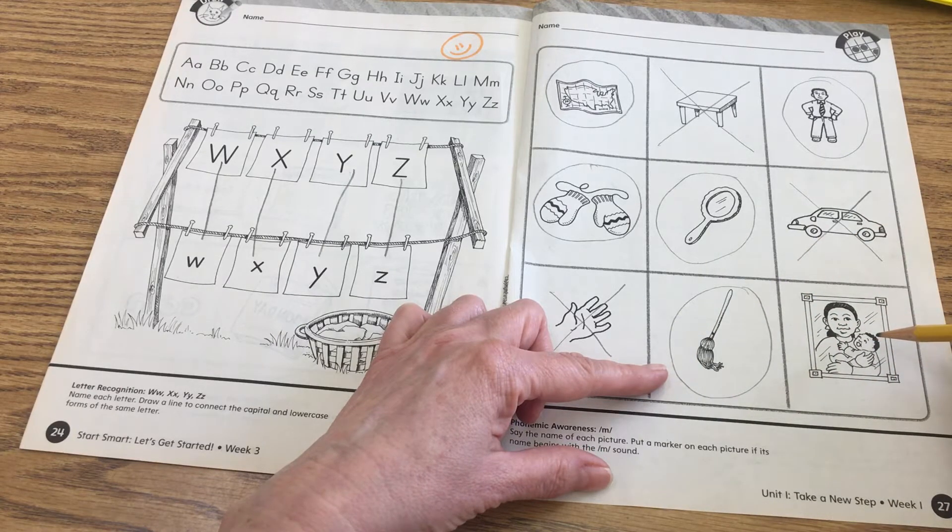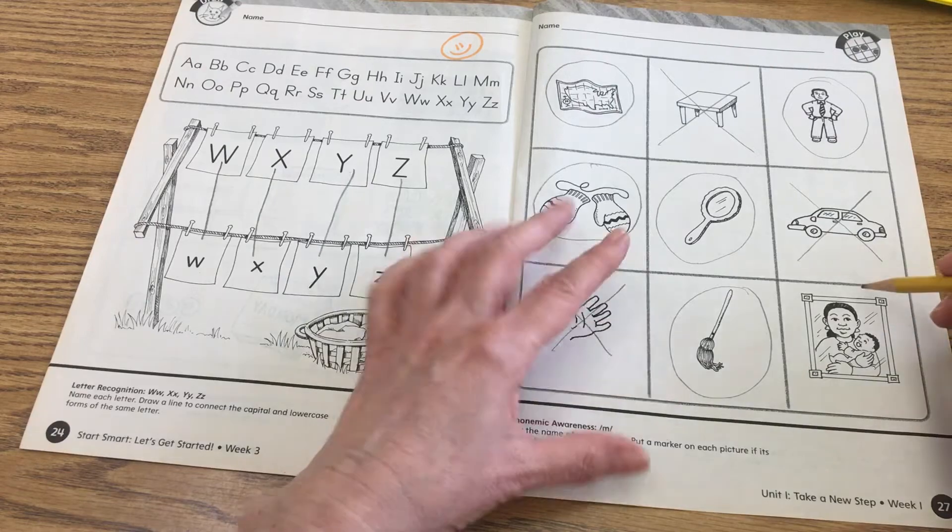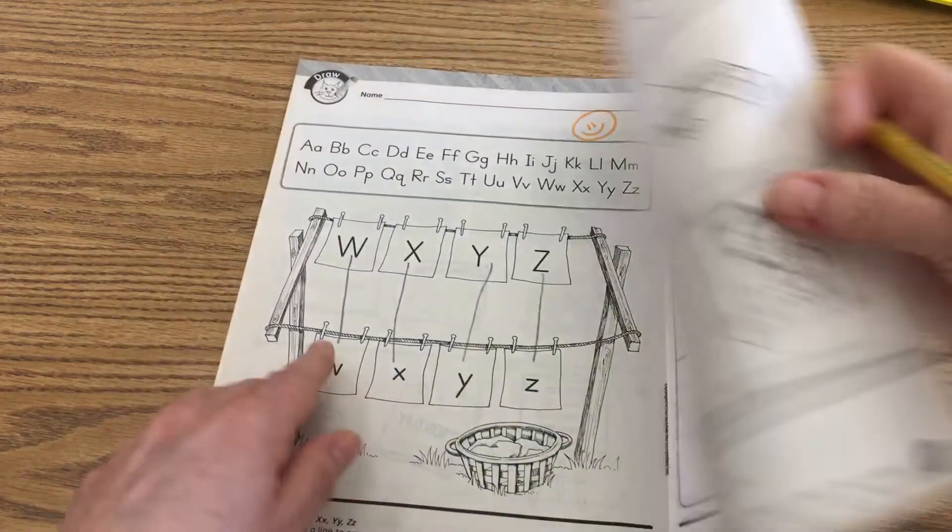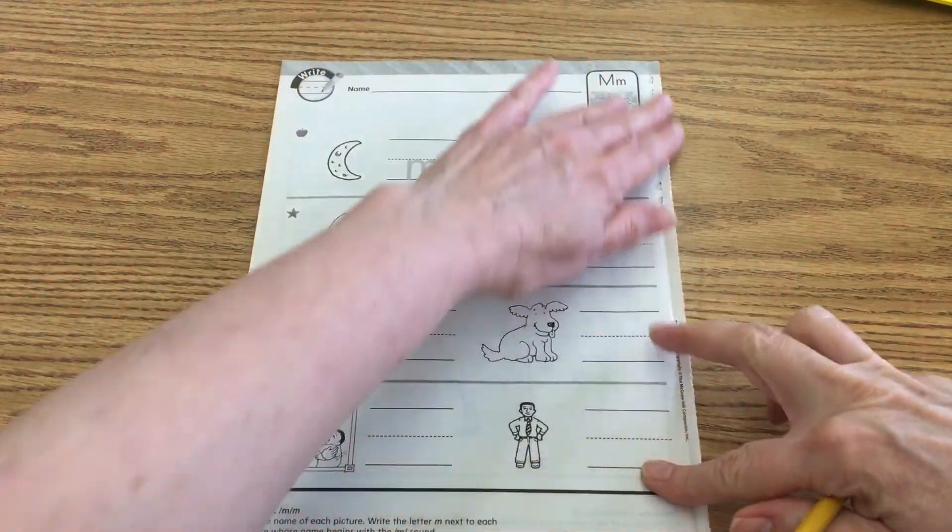Say mother. Mother. Mother. Mmm. Monkey. Mmm. Those both begin with the M sound. Okay, so easy peasy. Lemon squeezy. Let's go to the back side.